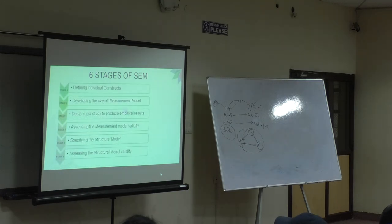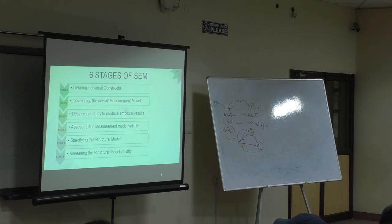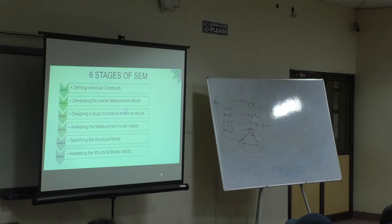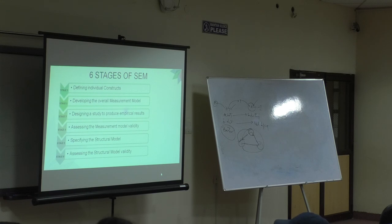There are six stages for how you conduct your SEM research. First, defining individual constructs — for example, perceived quality and customer expectation. Second, develop a measurement model based on the theory and literature review you have. Third, study the produced empirical results and assess the measurement model validity using tests such as discriminant analysis, conjoint analysis, convergent analysis, and multicollinearity tests.